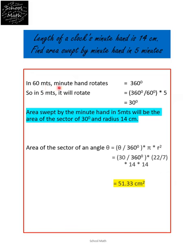In 60 minutes, the minute hand rotates 360 degrees. So in 5 minutes it will rotate 360 by 60 into 5, which is 30 degrees.